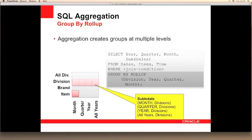The action of roll-up is straightforward. It creates subtotals that roll up from the most detailed level to a grand total following a grouping list specified in the roll-up clause. Roll-up takes as its argument an ordered list of grouping columns. First, it calculates the standard aggregate values specified in the group by clause, and then it creates progressively higher levels of subtotals, moving from right to left through the list of grouping columns. Finally, it creates a grand total.